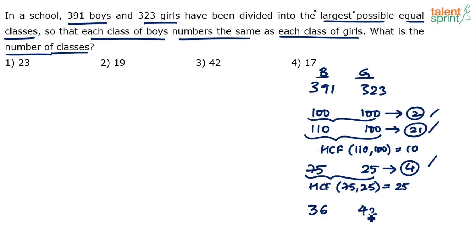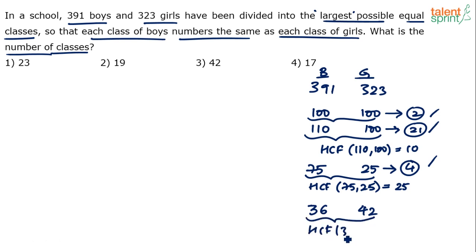I'm looking for a number that is a common factor of both 36 and 42, and the highest such factor. For example, 7 divides 42 (42 ÷ 7 = 6) but does not divide 36, so 7 doesn't work. The number must divide both 36 and 42, and be the highest such factor — so I need the HCF. HCF of 36 and 42 is 6, which is a factor of both. So the number of students per class is 6.